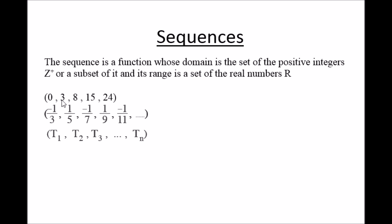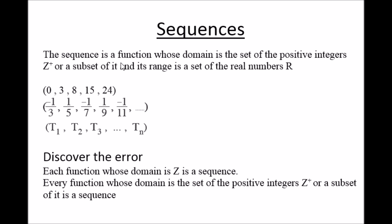The order of the first term is 1, the second is 2, the third is 3, and so on. The sequence is a function, and the order of the terms represents the domain of this function. That's why the domain of a sequence is a set of positive integers — it cannot be negative or zero, because the order must be positive. The value of each term represents the range of this function.